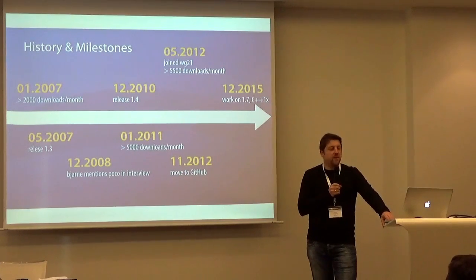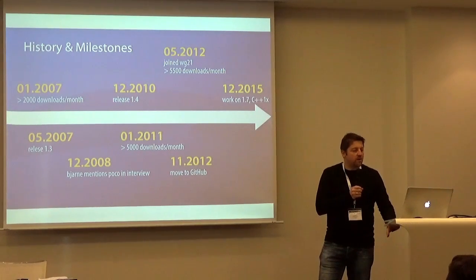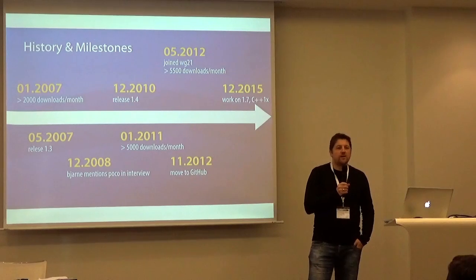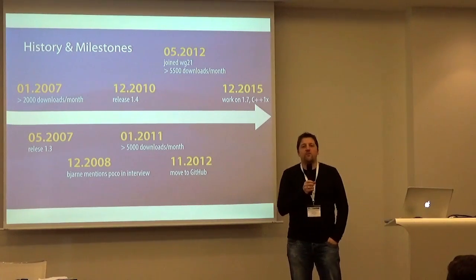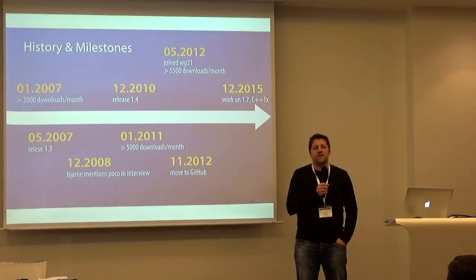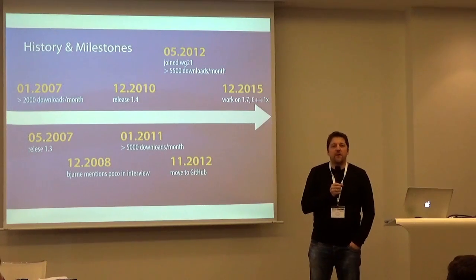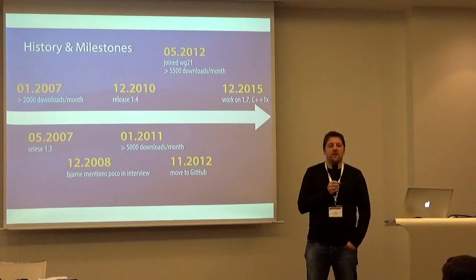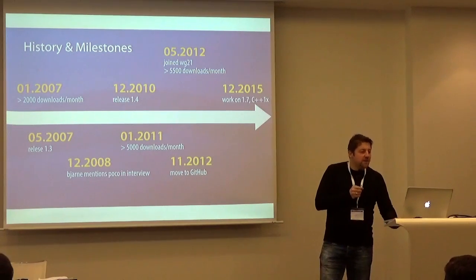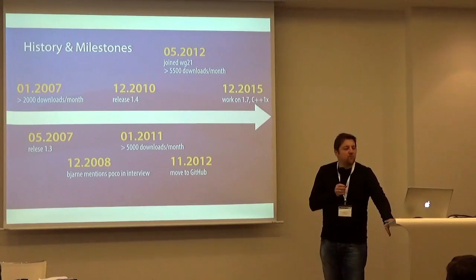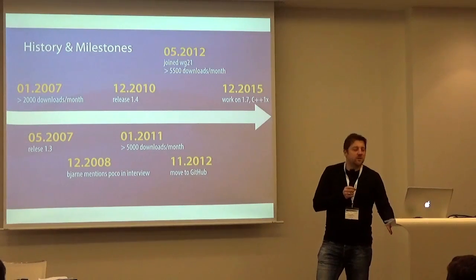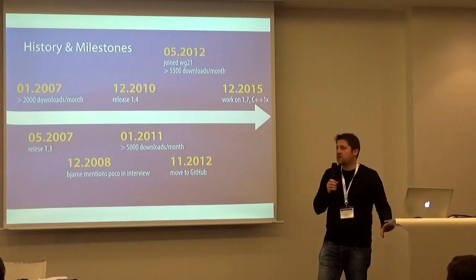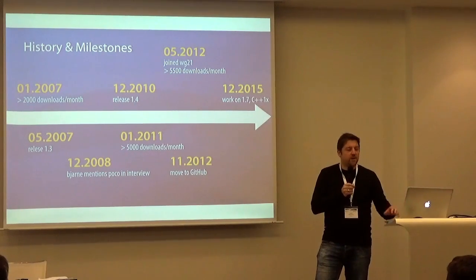In 2007 we first exceeded 2,000 downloads per month, then it went on to more than 5,000 in 2012. We also made a brief attempt at contributing to the C++ standard — Alex and I wrote a proposal for an IP address class for one of the upcoming standards, but it pretty much went nowhere, as apparently even a simple thing like a class that holds an IP address can lead to very lengthy and tiring discussions on the committee. Another highlight was in December 2008 when Bjarne Stroustrup in an interview mentioned the POCO libraries. Felt very good. And end of 2012 we moved to GitHub, which has been a huge improvement in the popularity of POCO.